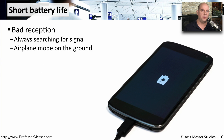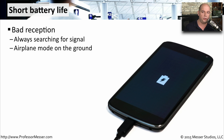One challenge we always have with mobile devices is making sure we have enough battery life. Occasionally, the battery may deplete faster than expected. Sometimes this is caused because your phone is just outside the range of your wireless provider — the phone is constantly trying to reconnect, failing, and trying again. This process of constantly using the radio inside the mobile device depletes your battery faster than expected. In these cases, you may want to disable cellular communication and rely on 802.11 wireless in your home or office.